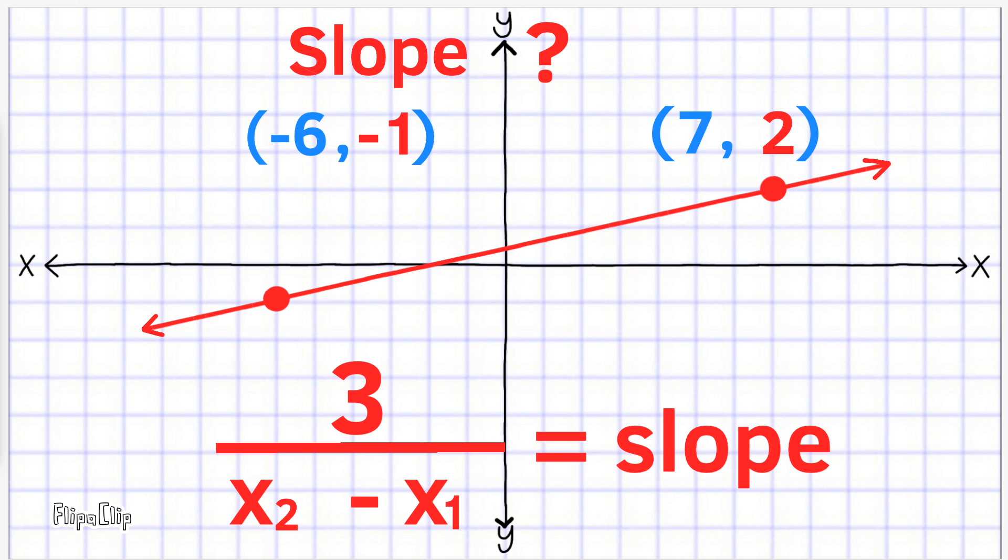So 2 plus 1 equals 3 over x₂ minus x₁. x₂ is 7 and x₁ is negative 6. So it will read 7 minus negative 6. I like to think of that as the opposite of negative 6, which is positive 6. 7 plus 6 is 13.